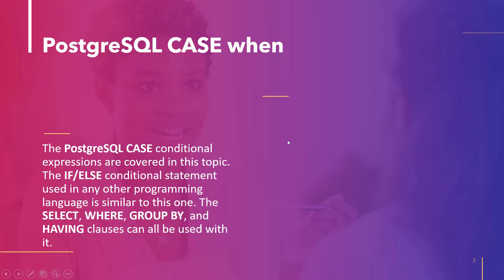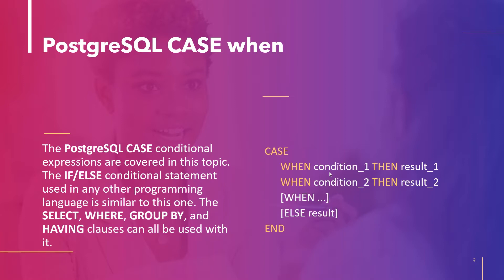PostgreSQL CASE WHEN is similar to an if-else conditional statement used in other programming languages. These conditional expressions are one of the most fundamental parts of any programming language. It can be used with SELECT, WHERE, GROUP BY, and HAVING clauses.